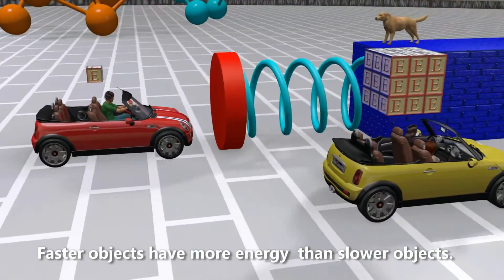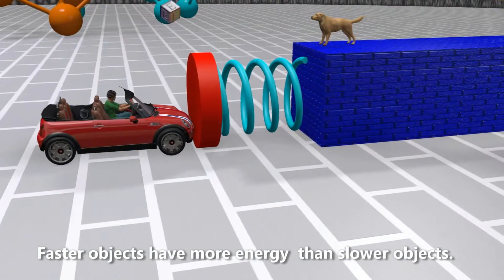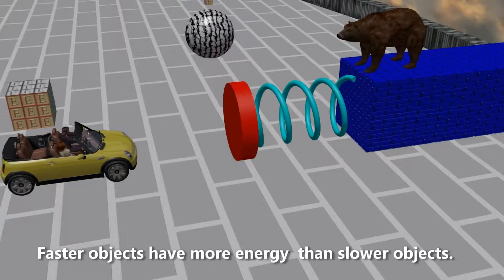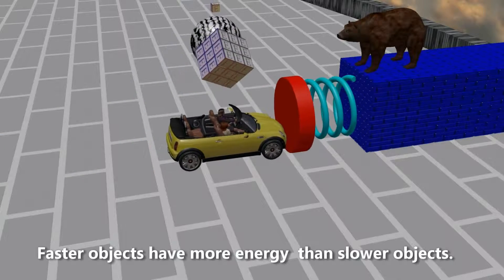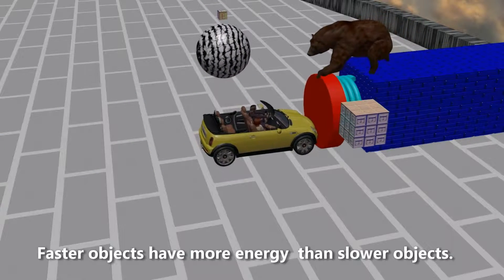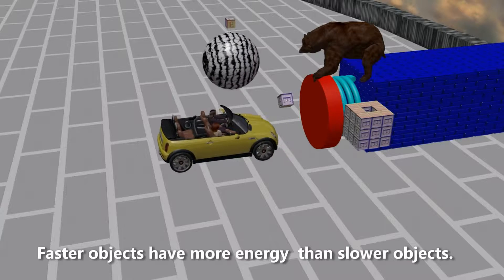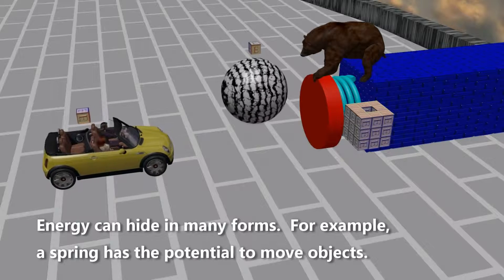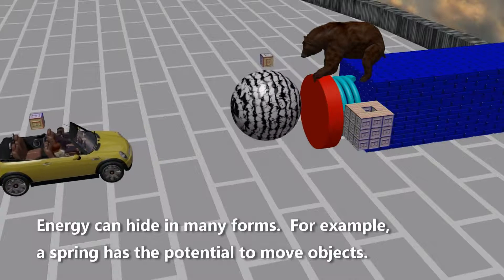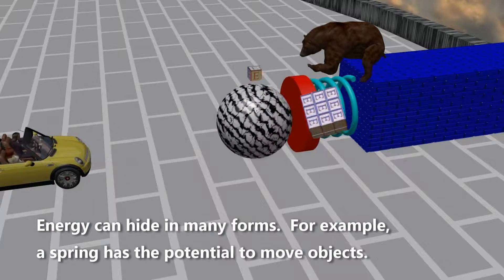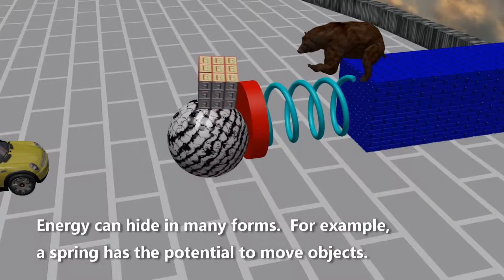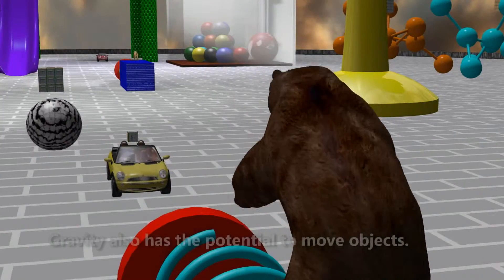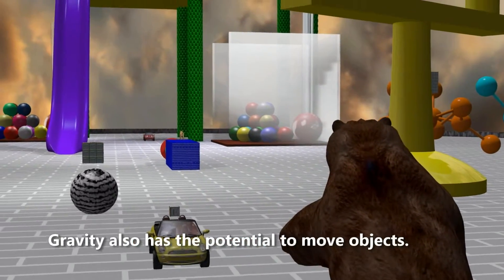Faster objects have more energy than slower objects. Energy can hide in many forms. For example, a spring has the potential to move objects. Gravity also has the potential to move objects.